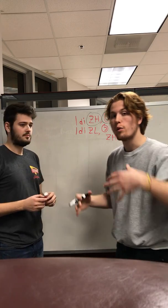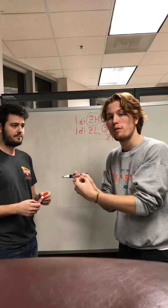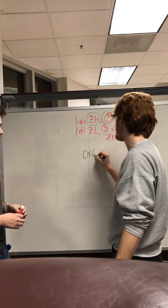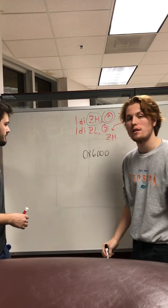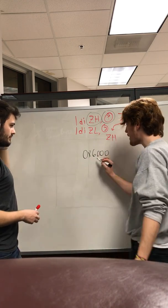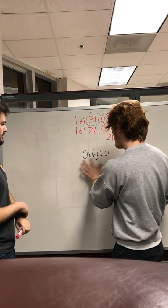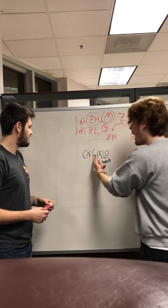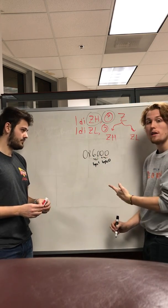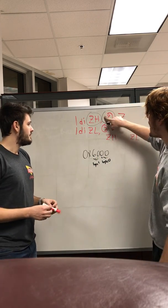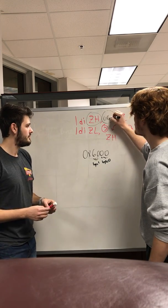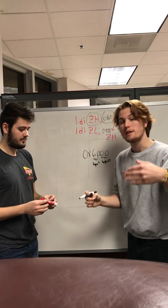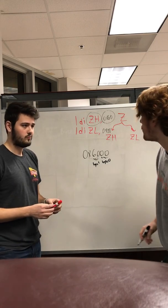What we want to expose you to is loading from a specific address in program memory. For the purposes of this video, let's say we're trying to access address 0x6000 in program memory. In hex, 0x6000 consists of two bytes: the high byte is 0x60 and the low byte is 0x00. It might be tempting to load 0x60 into Z high and 0x00 into Z low, but we'll explain why that's not the case.